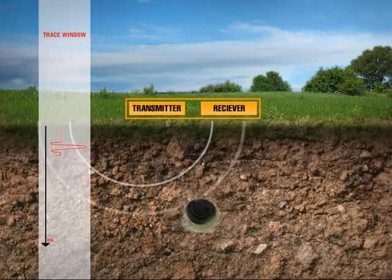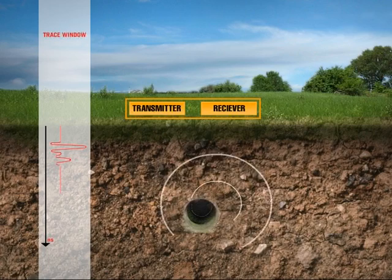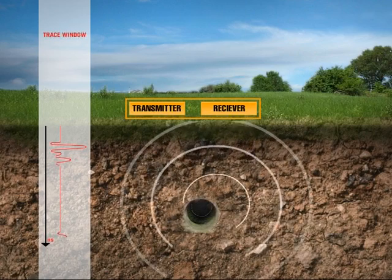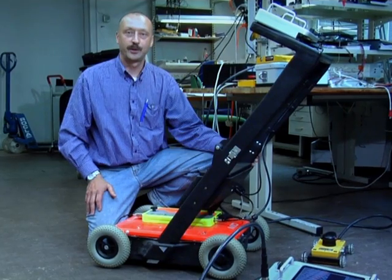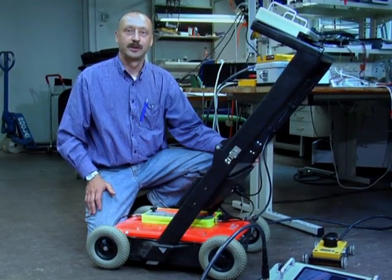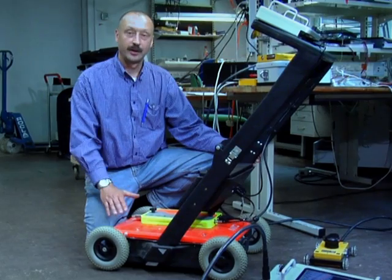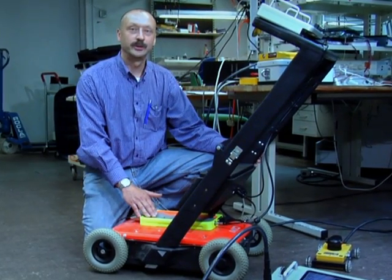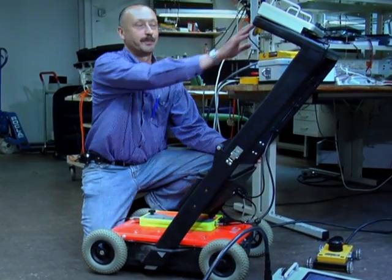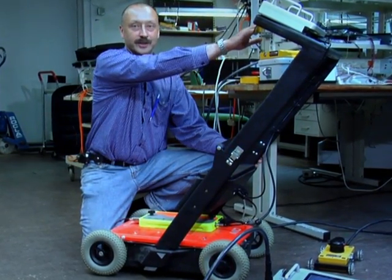By using this technique we are able to find hidden metallic and non-metallic structures. A GPR system consists of an antenna, a control unit, and a display storage device.